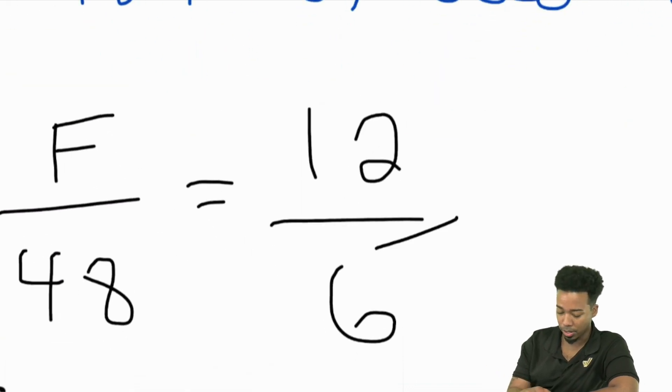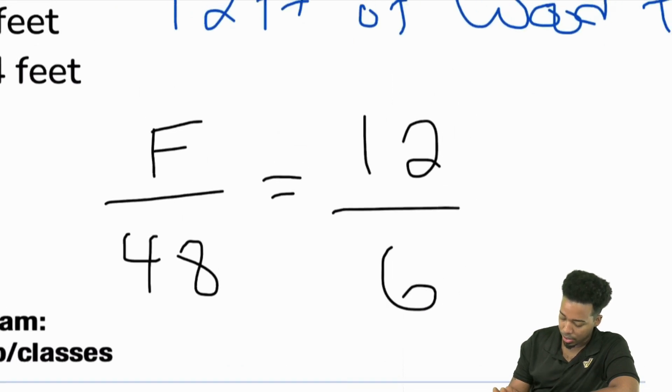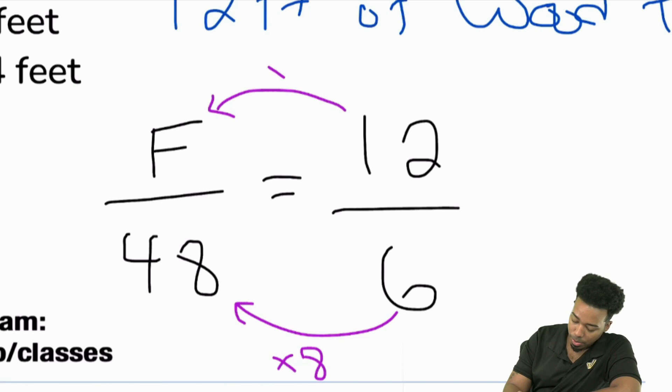Check this out, look how neat this can be. If I zoom on in over here I can show you that right over here I can go from 6 to 48, that's times 8. And that means I'll compare the same way over here, times 8 going right to left. We can do the same thing over here. What's 12 times 8? Right, that'll be 96. F equals 96 feet of wood.